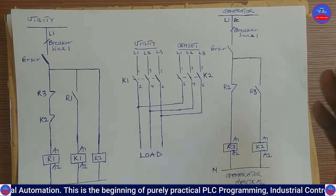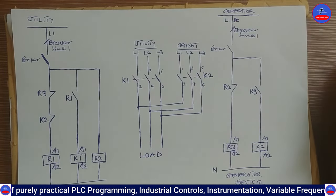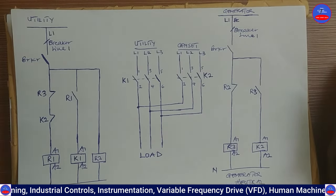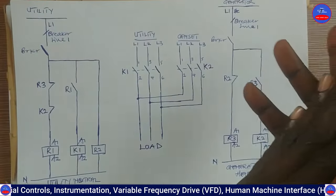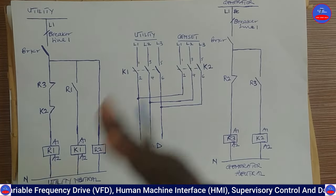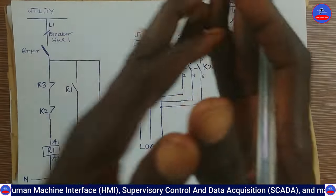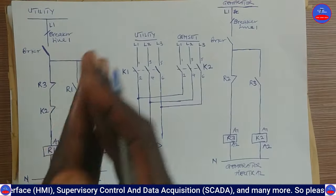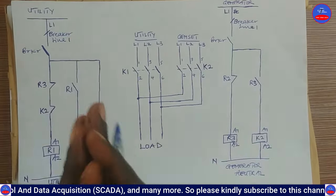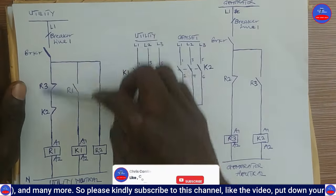An automatic changeover switch works in such a way that when the main utility power supply goes off, the automatic changeover will switch on the generator and apply the generator power to the load. When the utility power comes back again, the generator will go off and the utility power will be applied to the load. That is the basic principle of automatic changeover switch.